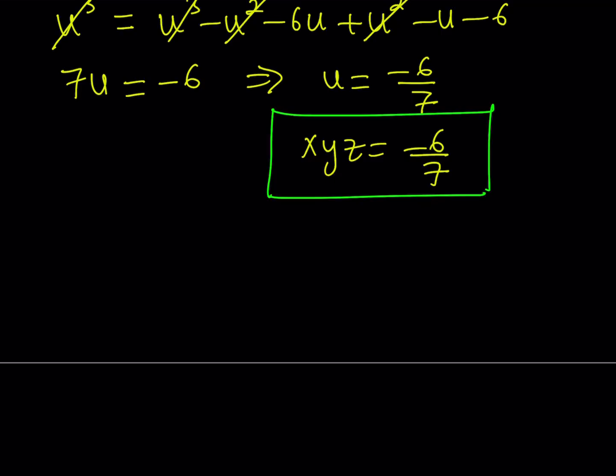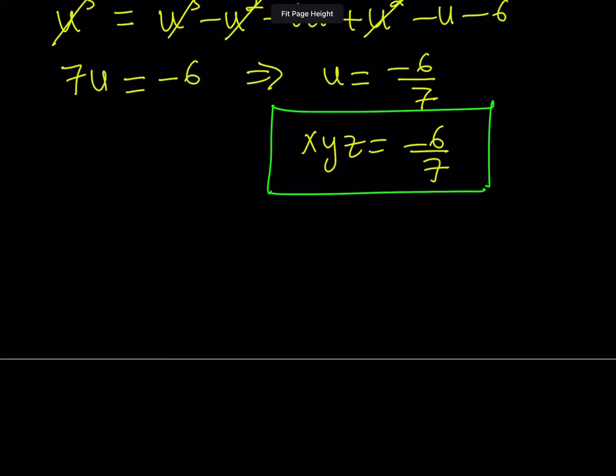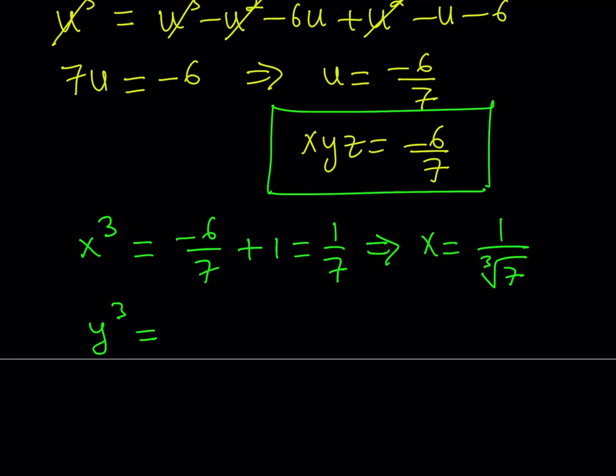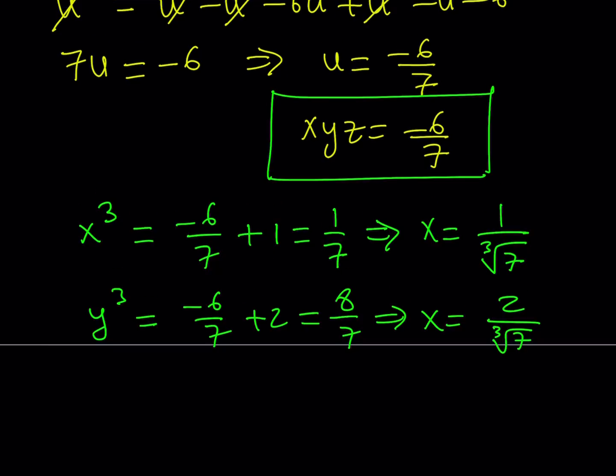Let's replace xyz with negative 6 over 7 in each equation. That gives x cubed equals negative 6 over 7 plus 1, which equals 1 over 7. Cube rooting both sides gives x equals 1 over cube root of 7. For y, we get y cubed equals negative 6 over 7 plus 2, that's 8 over 7. Cube rooting gives 2 over cube root 7.